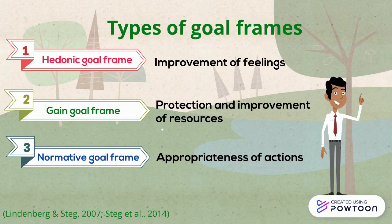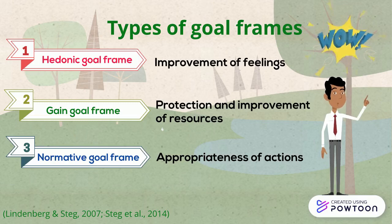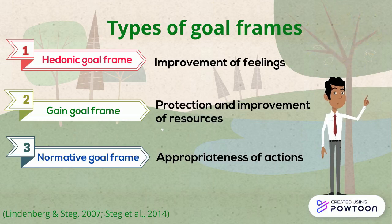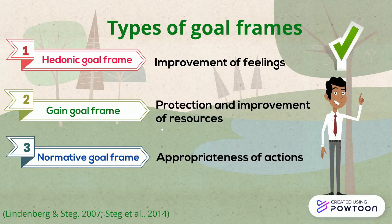According to Goal Framing Theory, there are three types of Goal Frames. The Hedonic Goal Frame activates sub-goals associated with the improvement of one's feelings. The Gain Goal Frame activates sub-goals associated with the protection and improvement of one's resources. And the Normative Goal Frame activates sub-goals associated with the appropriateness of one's actions.